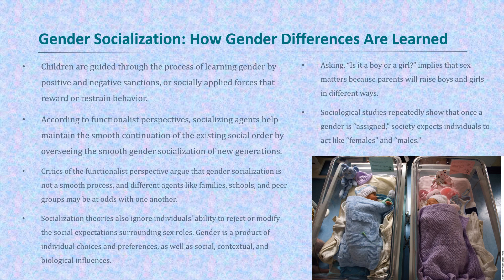Gender socialization: how are gender differences learned? Children are guided through the process of learning gender by positive and negative sanctions, or socially implied forces that reward or restrain certain behavior. According to the functionalist perspective, socializing agents help maintain the smooth continuation of the existing social order by overseeing the gender socialization of new generations. Critics argue that gender socialization is not a smooth process and different agents like family, school, and peer groups may be at odds with each other. Asking whether a baby is a boy or a girl implies that sex matters because parents will raise boys and girls in different ways.